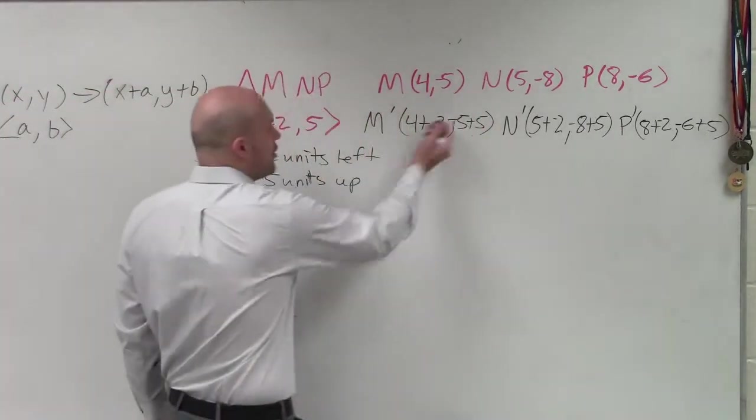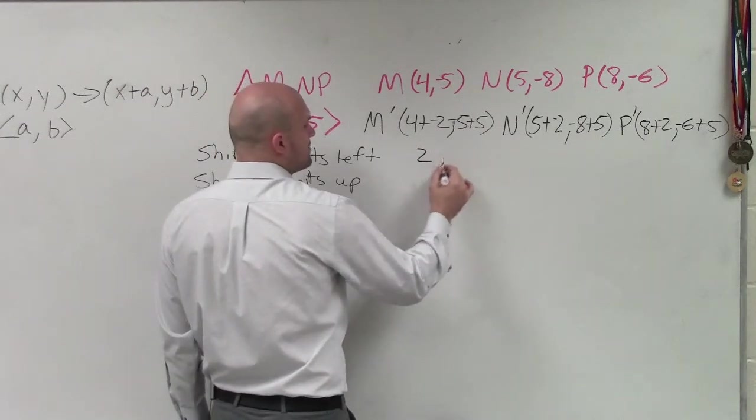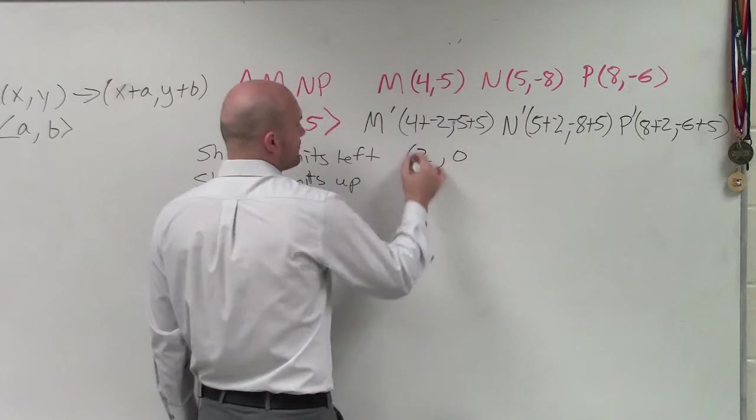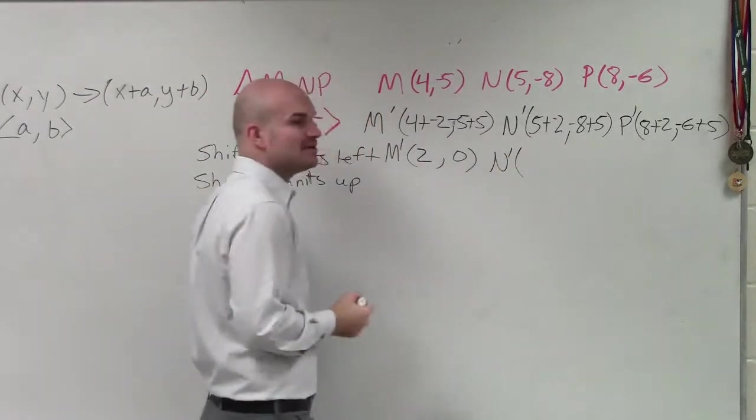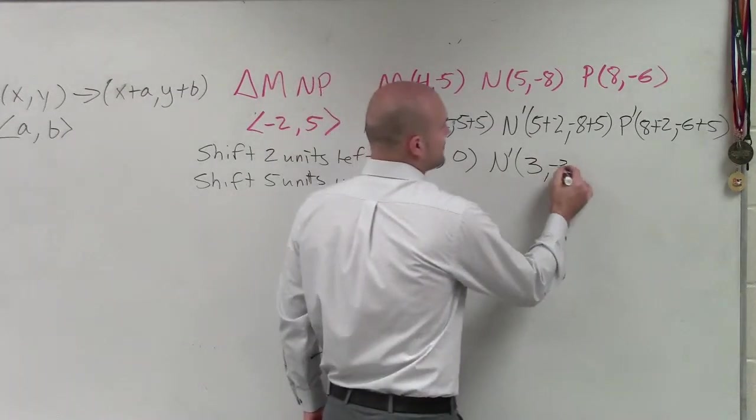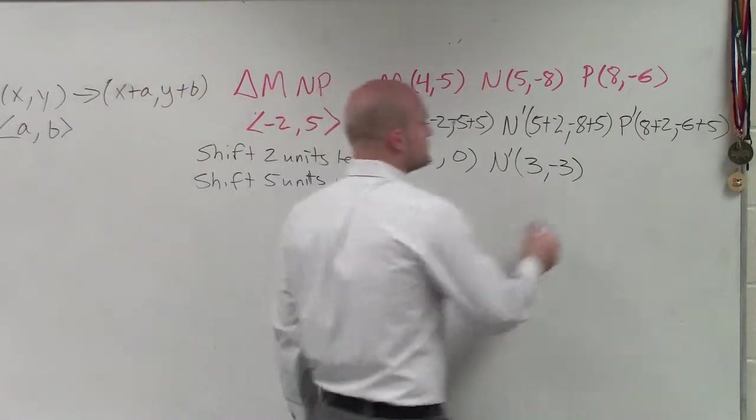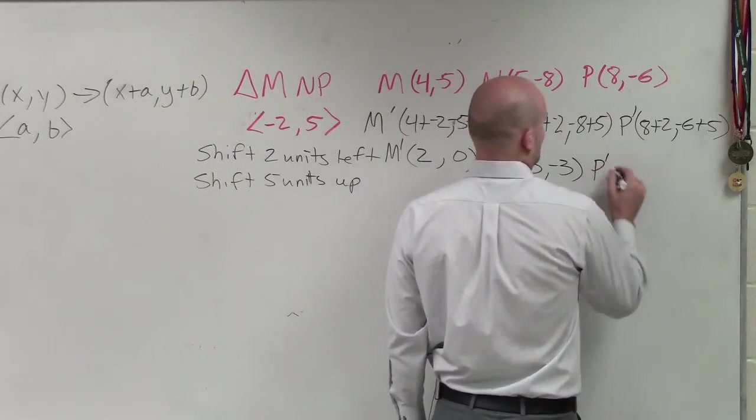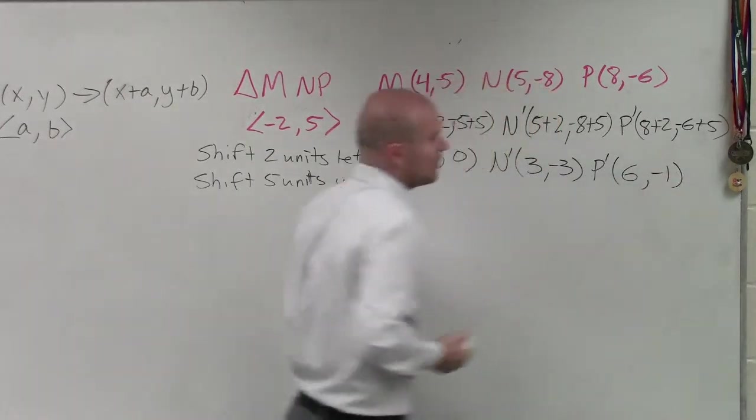So let's go and take a look at what this looks like. 4 plus negative 2 is just 2. Negative 5 plus 5 is 0. N prime now turns into 5 plus negative 2 is 3. Negative 8 plus 5 is negative 3. And P prime is going to be 8 plus negative 2 is going to be 6. And negative 6 plus 5 is going to be negative 1.